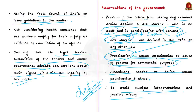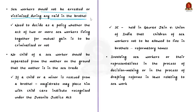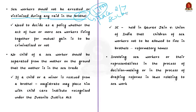Whether prostitution and sex work are the same or different has to be decided by the government. Another recommendation states that since voluntary sex work is not illegal and only running a brothel is unlawful, sex workers should not be arrested during raids on brothels. But according to ITPA, a brothel includes any place used for sexual exploitation or for the mutual gain of two or more sex workers — creating a conflict between the law and the Supreme Court recommendation. The government needs to decide whether two or more sex workers living together for mutual gain should be criminalized.